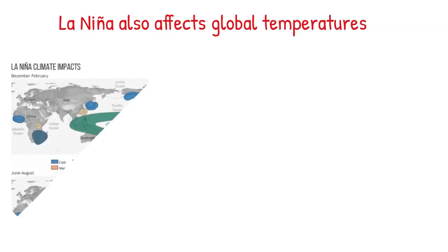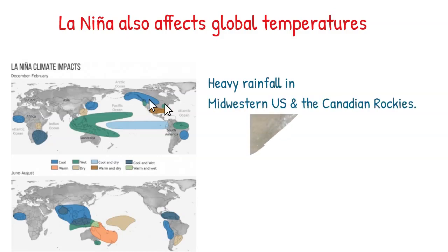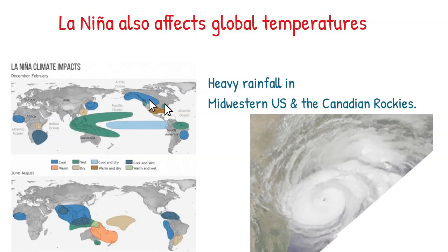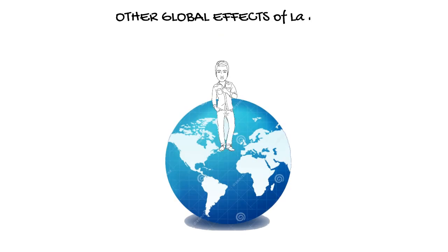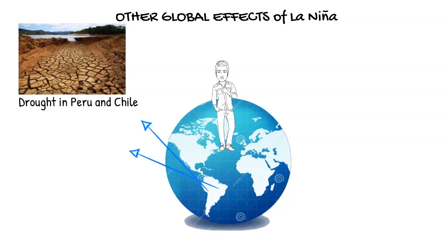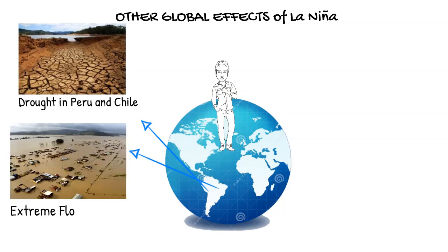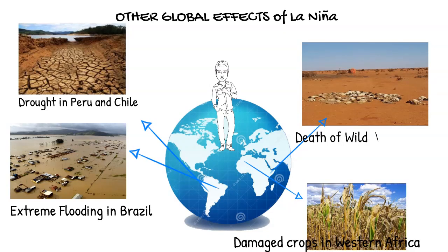Just like El Niño, La Niña also affects global temperatures. Heavy rainfall occurs in the Midwestern U.S. and Canada. Stronger hurricanes form in the Atlantic Ocean. Other global effects of La Niña include drought in Peru and Chile, extreme flooding in Brazil, damaged crops in Western Africa, and the death of wild animals due to drought in Somalia.